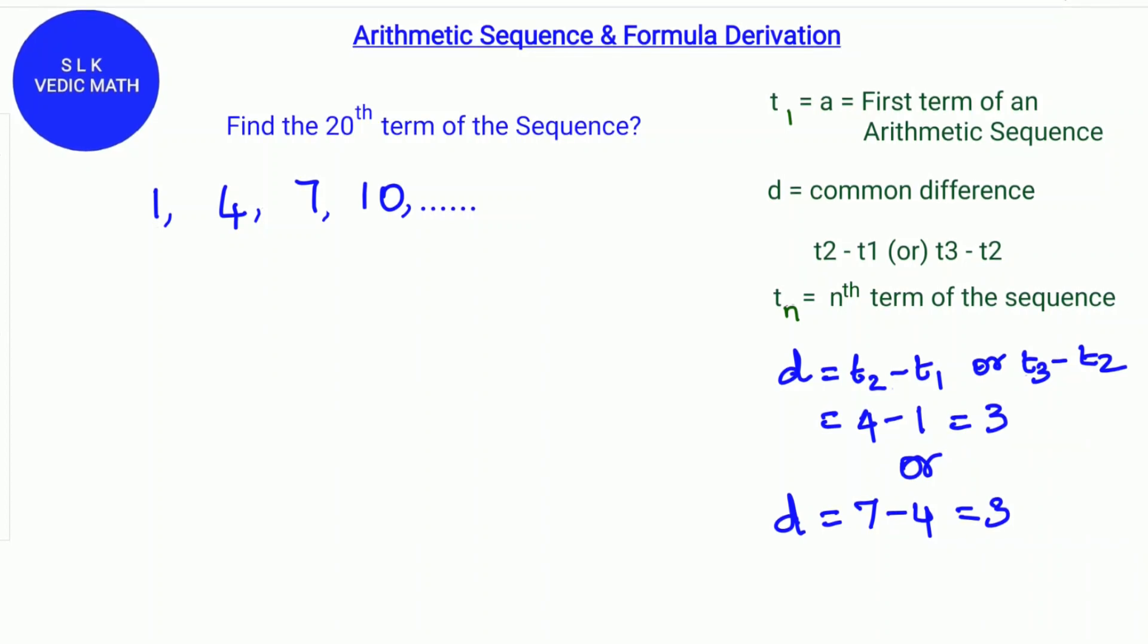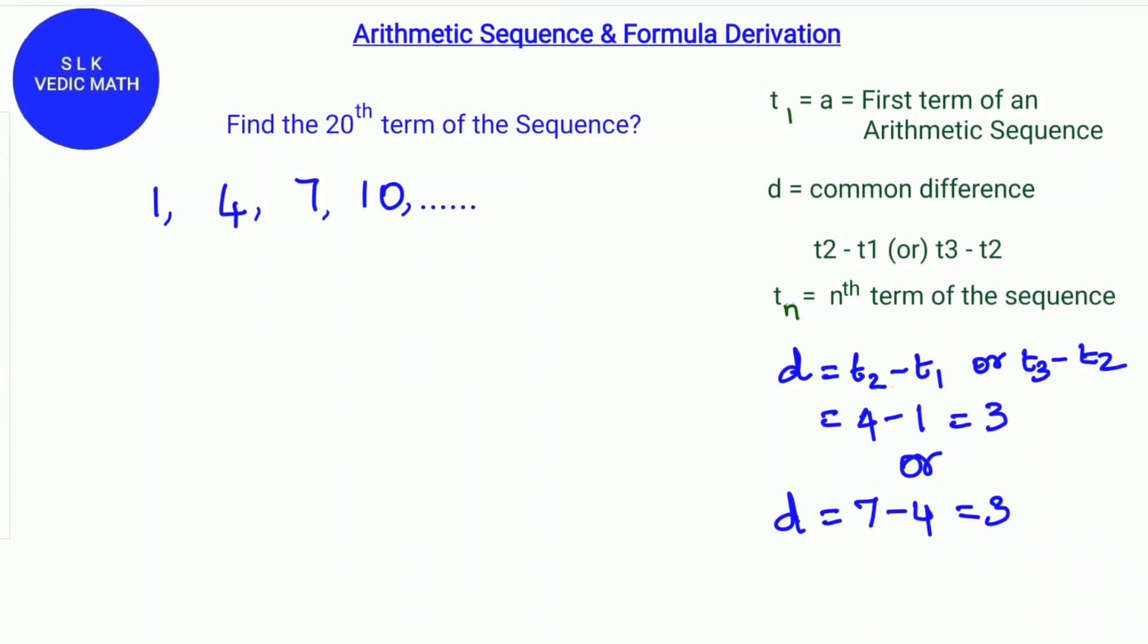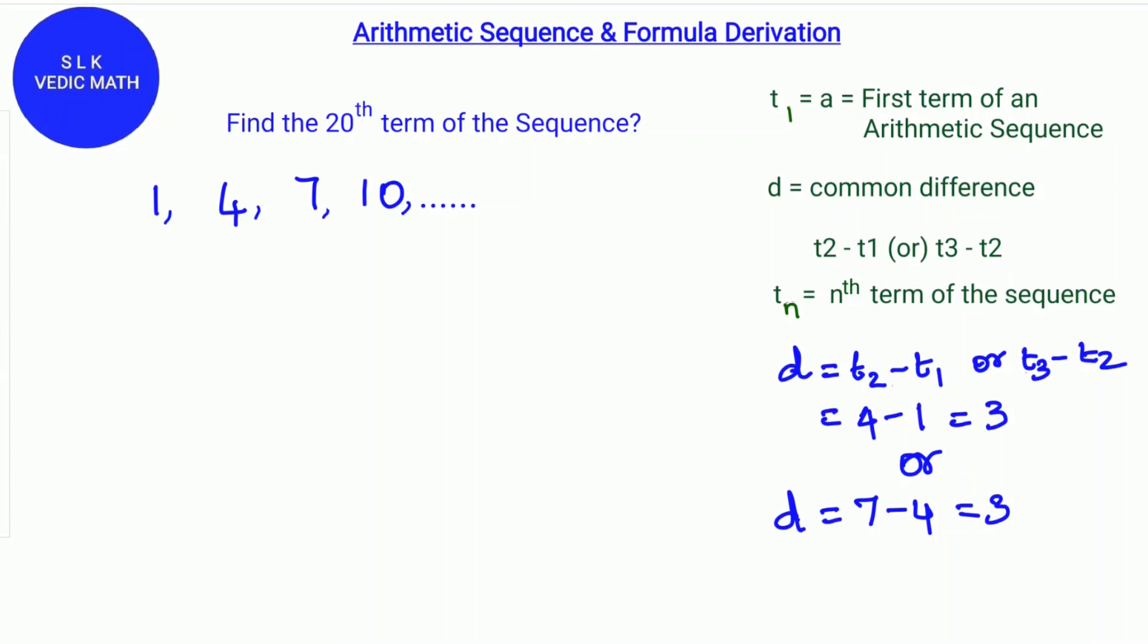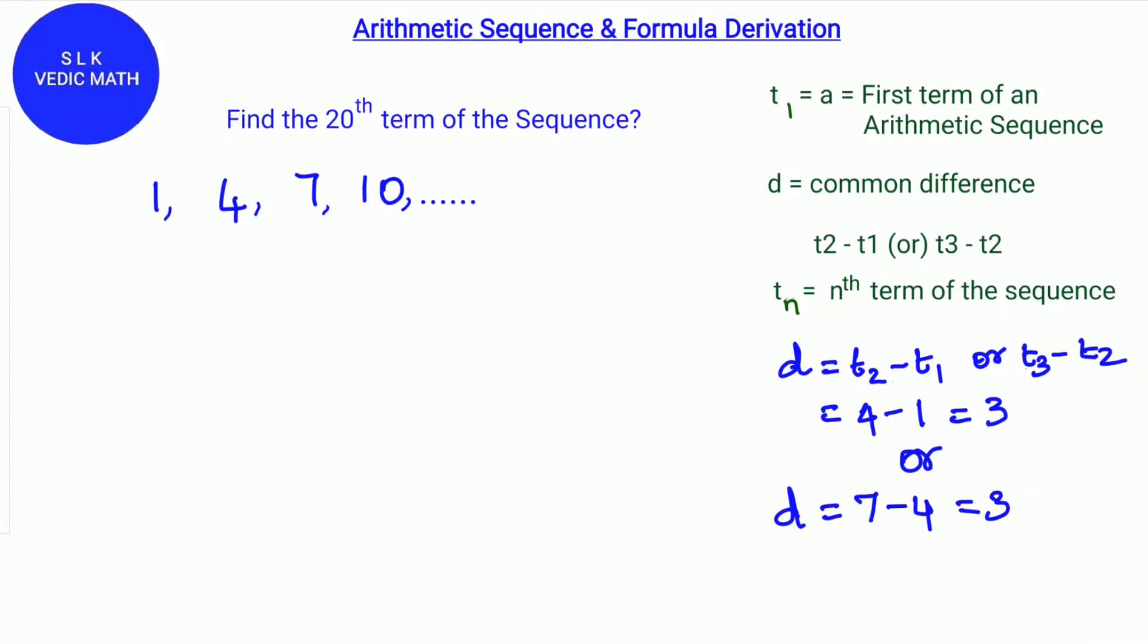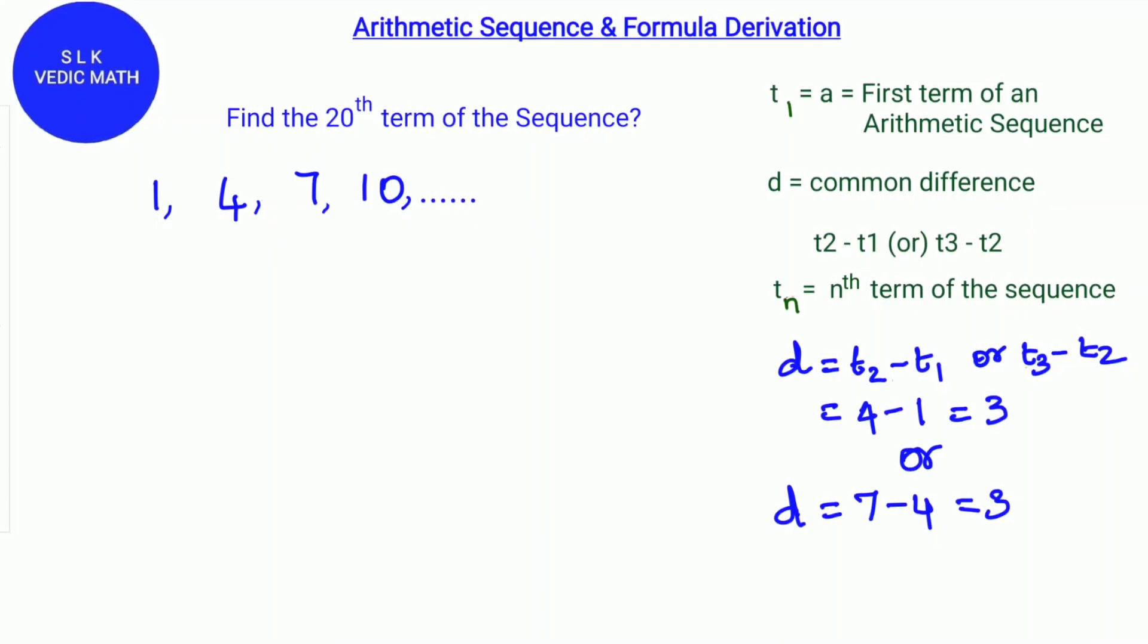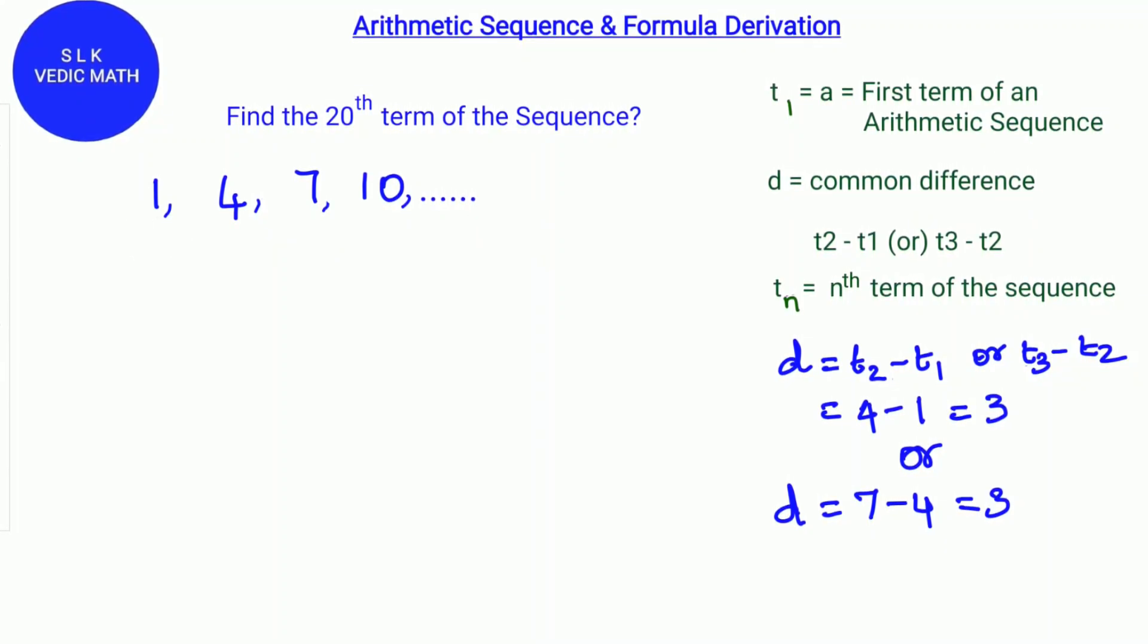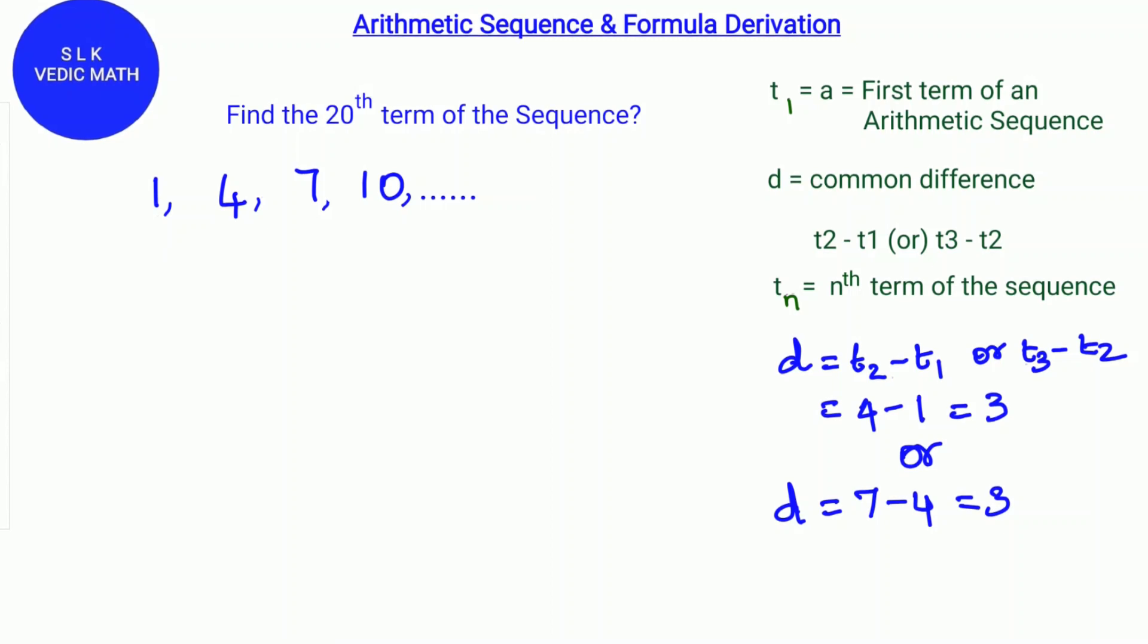Arithmetic sequence is a sequence of numbers by either adding or subtracting by a common difference. The difference of any two successive numbers of the sequence is always the same.